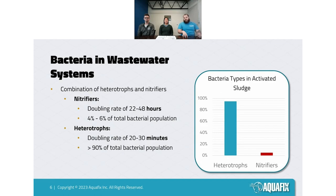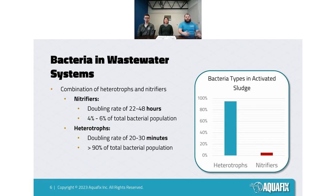For nitrifiers, breaking down ammonia for energy is incredibly inefficient. They've hollowed out a nice niche with not much competition, but it's a difficult and energy-consumptive process. As a result, only four to six percent of the microbial population in your system will be nitrifiers. The vast majority of your population is general heterotrophs breaking down BOD and other organic sources.